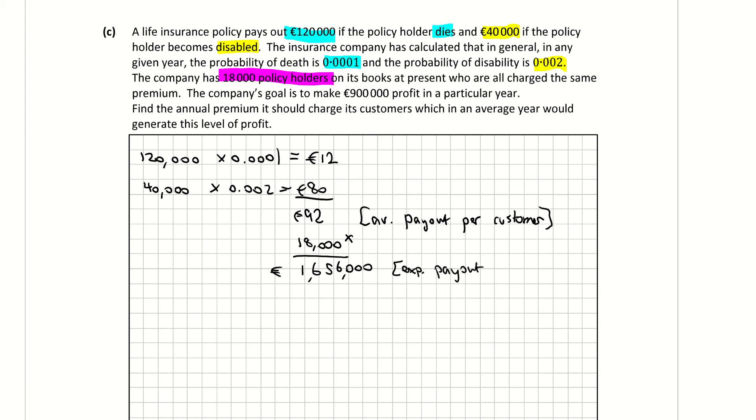Now we don't need to write this down each time. You don't need to write down expected payout and so on. That's just to show you what we're basically figuring out here as we go along. Now they want to make a profit of €900,000. So we need to add on €900,000 to this to actually calculate the total amount of money that this insurance company needs. So that's €2,556,000. So that's how much money they need to make in order to make a profit of €900,000 and pay out all those claims.